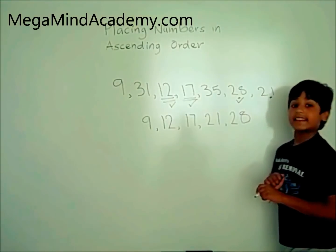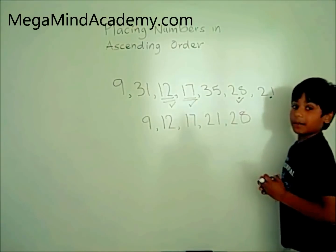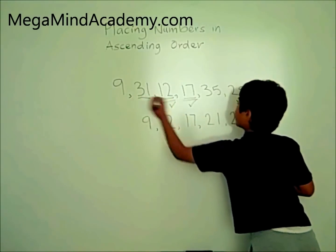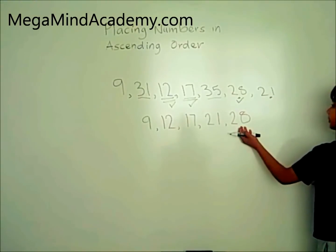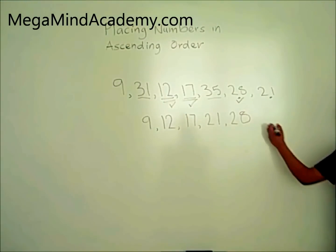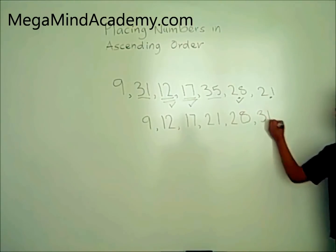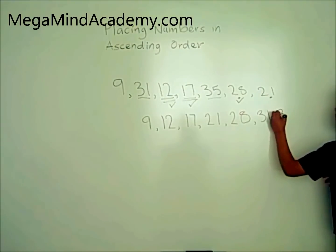Now that we covered the numbers which are less than 10, the numbers which are less than 20, and the numbers which are less than 30, let's cover the numbers which are less than 40. The numbers which are less than 40 are 31 and 35. 31 is the closest higher number to 28; there are no other numbers between 28 and 31. So let's put 31 next to 28. That leaves us with 35, which is bigger than 31. There are no other numbers between 31 and 35. So let's put 35 next to 31.